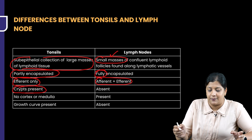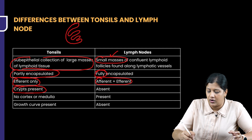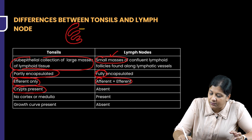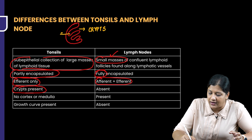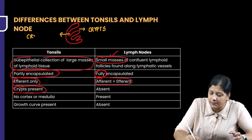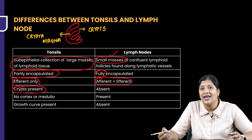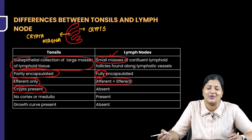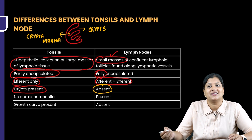Let's talk about crypts. Tonsils have depressions on the medial surface. These depressions are called crypts. The largest crypt is called cryptomagna. We have crypts in the tonsil, but do we have such crypts in a lymph node? Of course not — they are absent in lymph nodes.